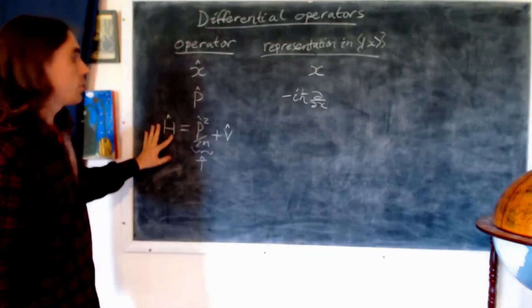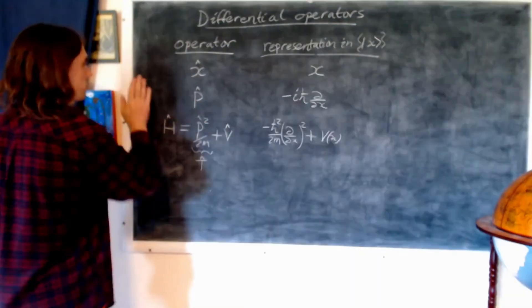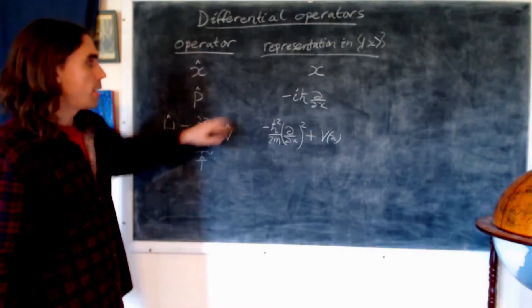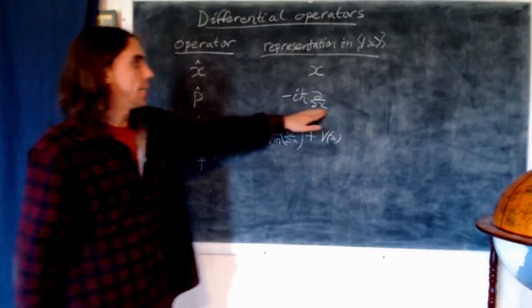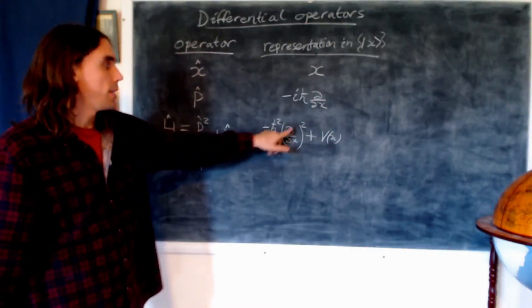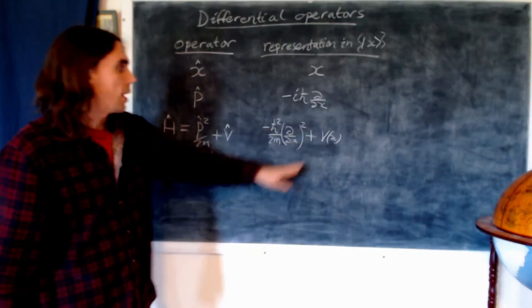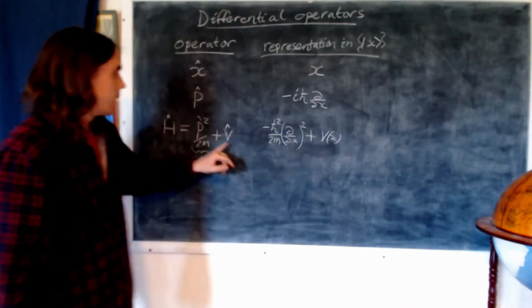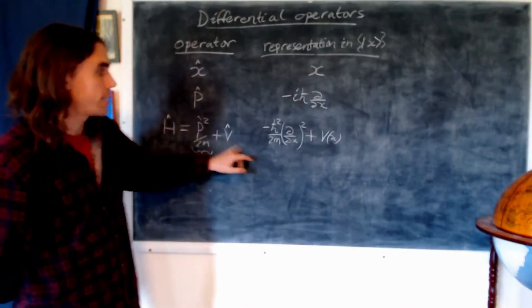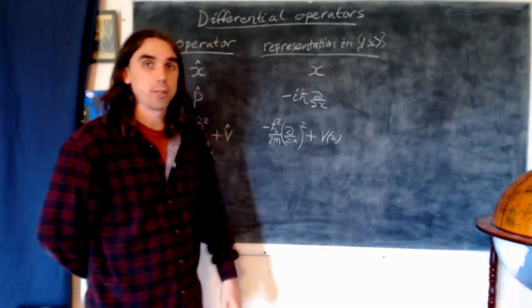The Hamiltonian takes the following form: it's p squared over 2m. Since p is defined as minus i h-bar d/dx, it must be minus h-bar squared over 2m times d squared by dx squared. And the potential operator in the position basis is just the potential as a function of x.